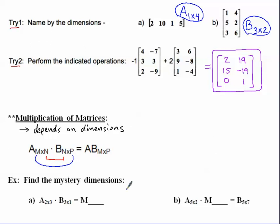Let's look at a little game to figure out mystery dimensions before doing any multiplications. Matrix A here is a 2 by 3, and matrix B here is a 3 by 1. Since the middle numbers match up, I know I can do this multiplication, and therefore the outer numbers give my answer: the mystery dimensions are 2 by 1.